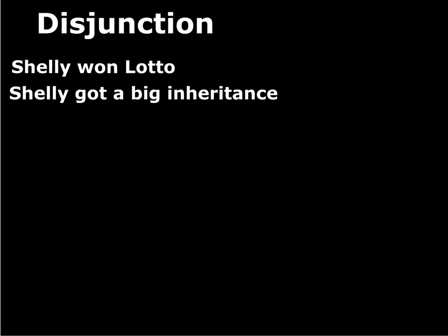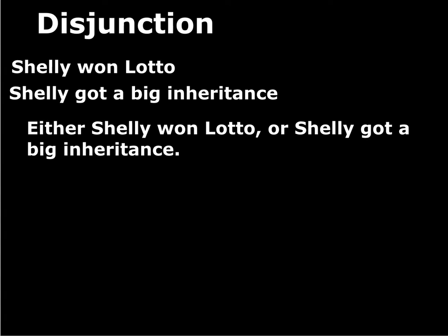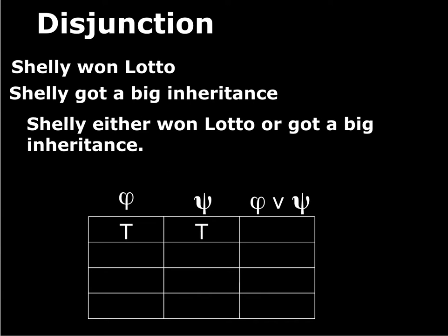We'll do the same thing that we did with conjunction and negation. I'm going to walk through an example of a compound statement — in this case a disjunction — and then we'll see what happens when the components are true or false. Here's the example I want to use. Atomic statements: Shelly won lotto, and Shelly got a big inheritance. Suppose you and I are walking around and we see our friend Shelly driving around in a new Mercedes, and we know that she doesn't have much money, so we're guessing how this is the case. My guess is: either Shelly won lotto or Shelly got a big inheritance. That's my guess to explain why she's driving around in this expensive car.